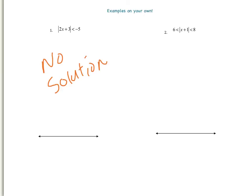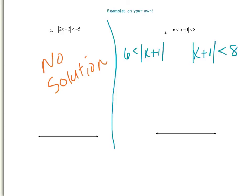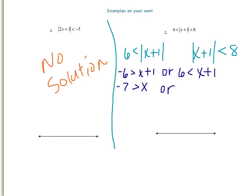Now let's look at the next example. This one might look a little different — we have two inequality signs and the absolute value is in the middle. This is called a compound inequality. A compound inequality must be separated into two separate problems. Because the absolute value is greater than 6, we will write this one as a disjunction: x plus 1 is less than negative 6, and x plus 1 is greater than positive 6. Solving each one for x by subtracting 1 from both sides: x is less than negative 7, or x is greater than positive 5.